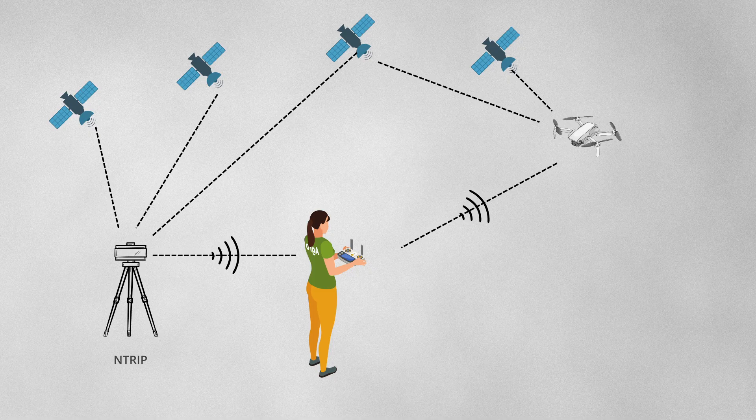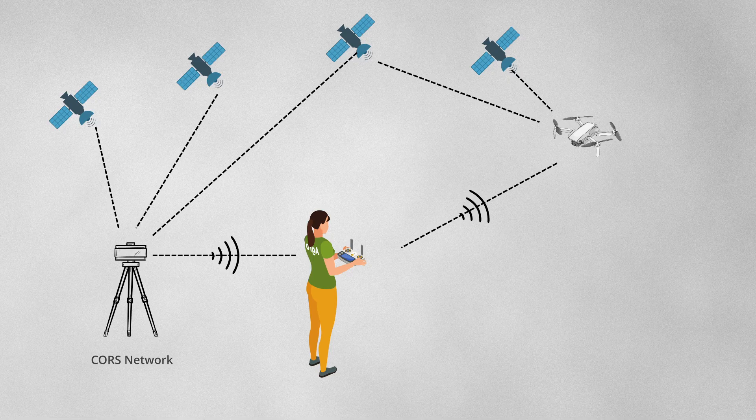You'll often hear the phrase NTRIP instead of CORS. NTRIP and CORS are different things; however, the terms are often used synonymously in our industry. NTRIP is Network Transport of RTCM via Internet Protocol, and CORS — Continuously Operating Reference Station — are forms of RTK differential correction done using a cellular modem and a base station network.